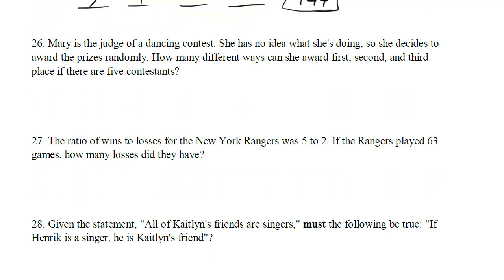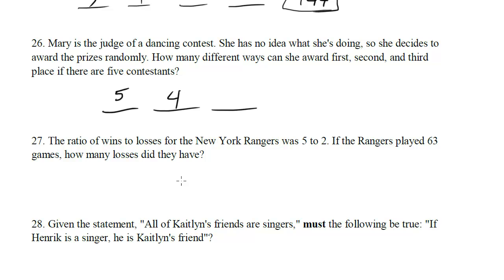Question 26: Mary is the judge of a dancing contest. She decides to award prizes randomly. How many different ways can she award first, second, and third place if there are five contestants? This is another counting problem, but order matters. We have three choices to make. For first place, there are 5 contestants. Once one is chosen for first, there are 4 left for second, and then 3 left for third. Multiplying them out: 5 times 4 times 3 gives us 60 different ways.